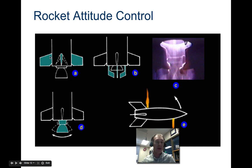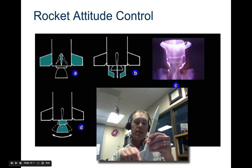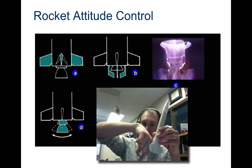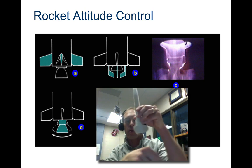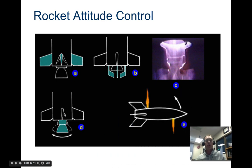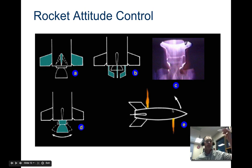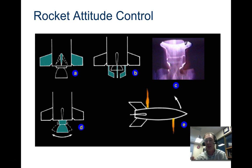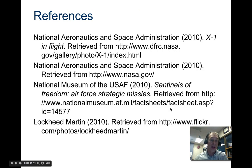Professional rockets have attitude control systems. Some use adjustable fins, but many have a nozzle on a gimbal that can pivot. If the rocket starts to veer in one direction, the gimbal steers the propellant the other way to push it back upright. Some rockets also have small attitude adjustment thrusters for making corrections in orbit — like the Space Shuttle making attitude adjustments — and that's it for rockets.